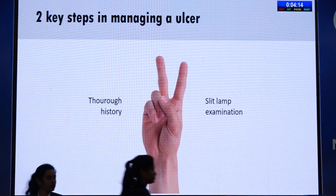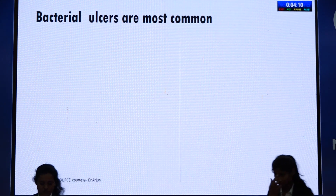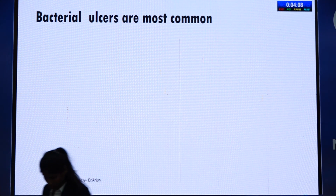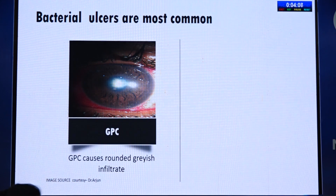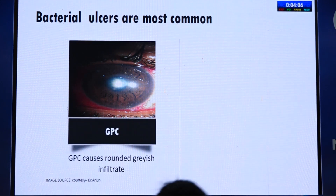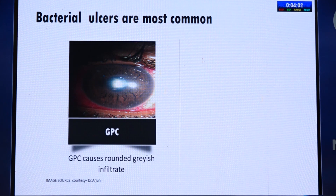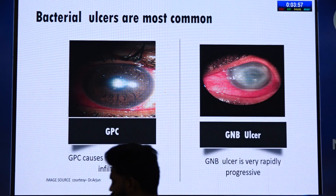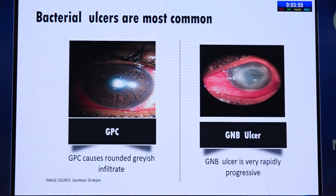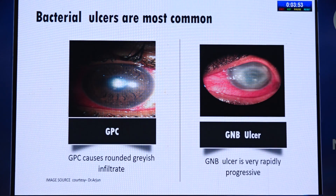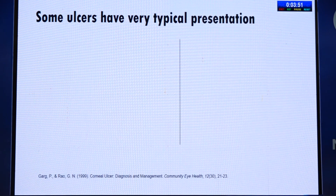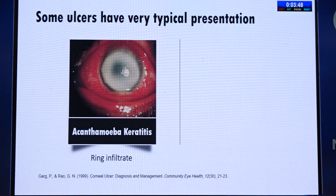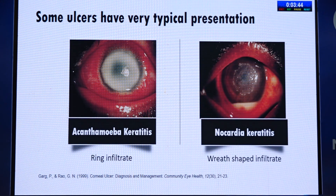Bacterial ulcers are most common. GPC ulcers can sometimes be picked up clinically — they are very roundish with grayish infiltrate. GNB is a very progressive ulcer that progresses quickly and may have a typical presentation. A ring infiltrate is usually seen in acanthamoeba keratitis, and a wreath-shaped infiltrate is usually seen in nocardia keratitis.